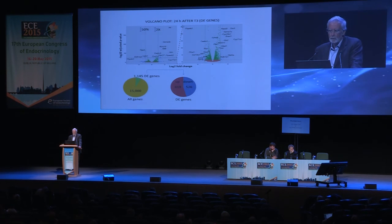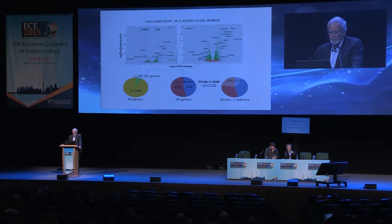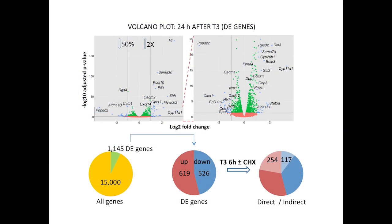This is a volcano plot of differentially expressed genes at 24 hours after T3. From around 15,000 genes expressed in the cultures, around 1,000 are regulated by T3 — about 600 up-regulated and about half down-regulated. In the presence of cycloheximide, a fraction of genes still respond: 254 up-regulated and 116 down-regulated. About one-third of all genes regulated by T3 in the primary cultures — in neurons and astrocytes, because it is a mixed culture — represent direct transcriptional responses to T3.